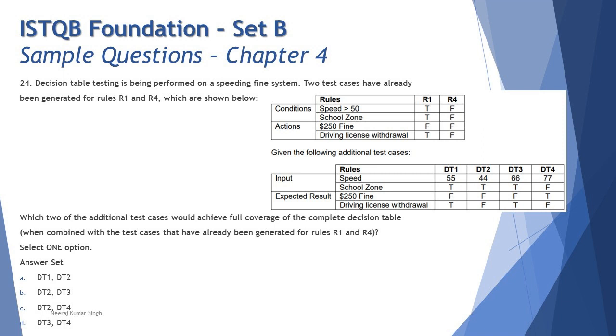It's very straightforward and simple to solve these questions. It's just that we try making it slightly complex, which is not at all required. So the right answer here is DT2 and DT4 are the two remaining test cases which should be included along with R1 and R4 to complete the four tests required to test the scenario.